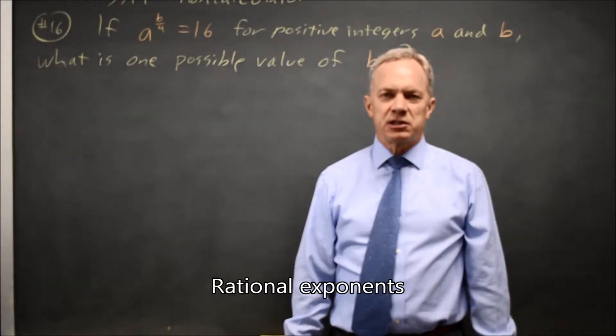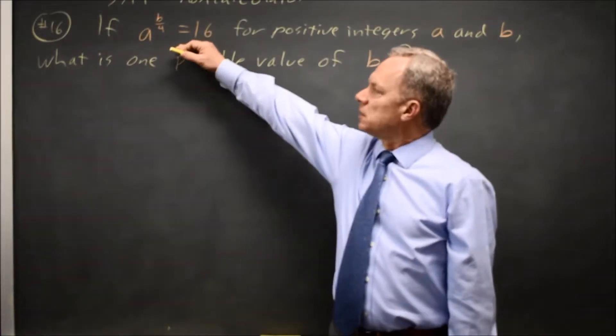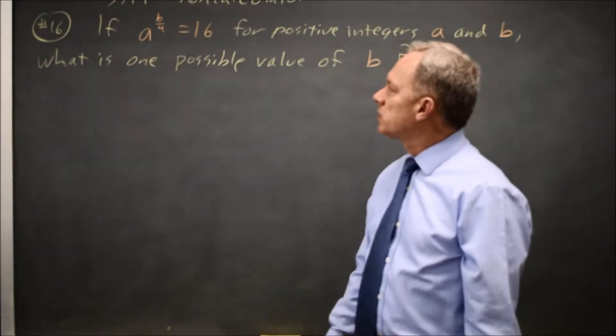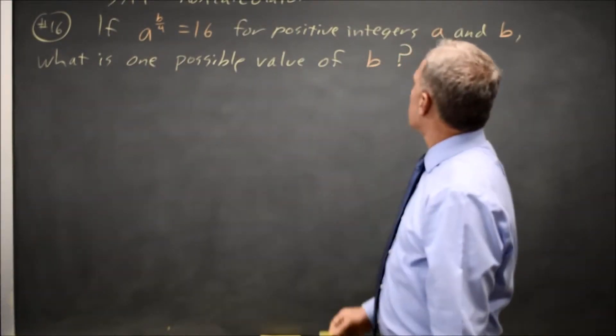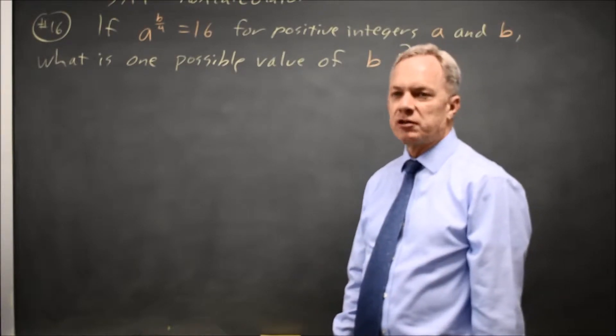This is non-calculator question number 16. College Board gives us an equation with a power of a and asks for positive integers a and b. What's one possible value of b?